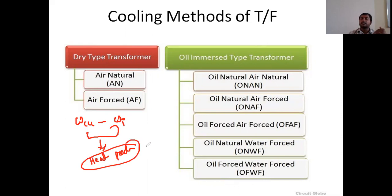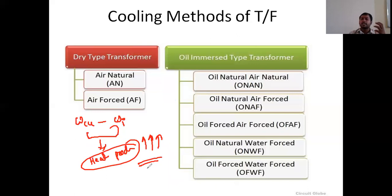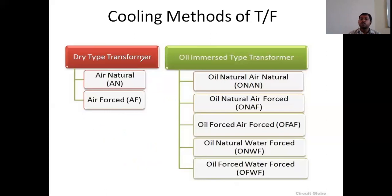This heat will gradually increase, and at a particular temperature the winding may get short circuited, and the lamination may also get short circuited. The temperature rises exponentially, so that huge damage will take place in the transformer. To avoid such problems, we use different types of cooling methods.